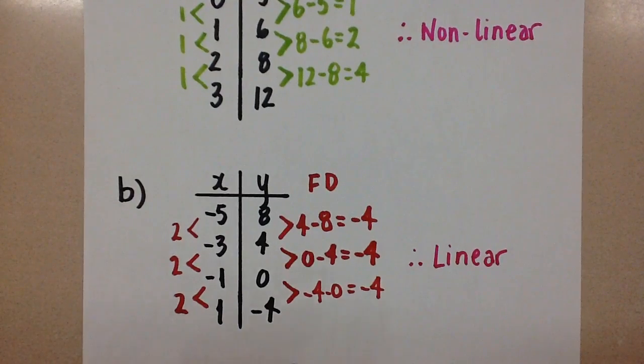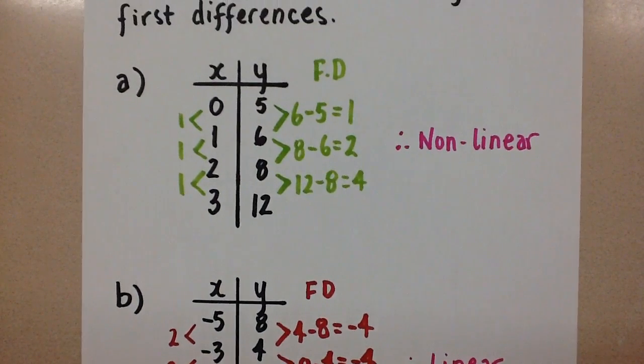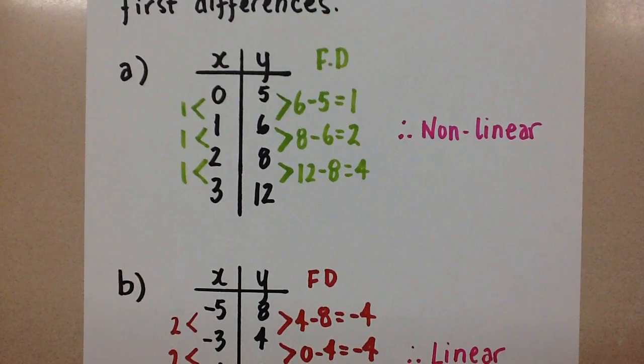And that is how we use first differences to find if a relation is linear or nonlinear when we're given a table of values. Thanks for watching. Mrs. A loves math.